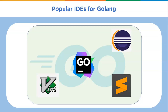VimGo — Vim is often called a programmer's editor, and its plugins add Go language support for Vim. Visual Studio Code, using the Go extension, gives you features like IntelliSense, code navigation, symbol search, testing, debugging, and many more to help in Go development. You can install the Go extension from the VS Code marketplace.